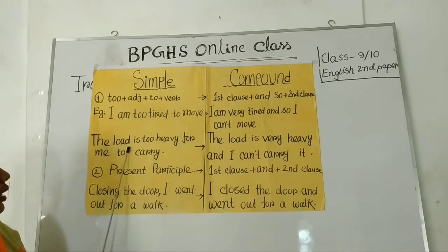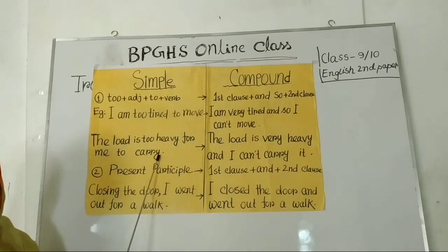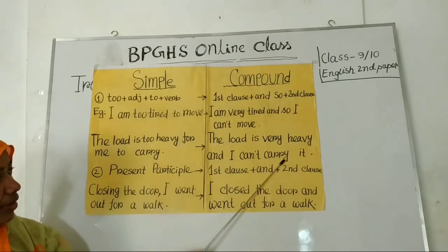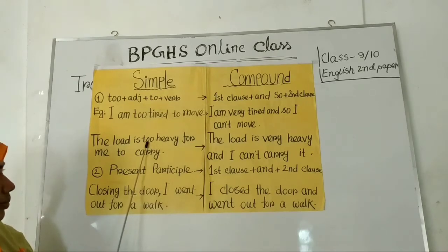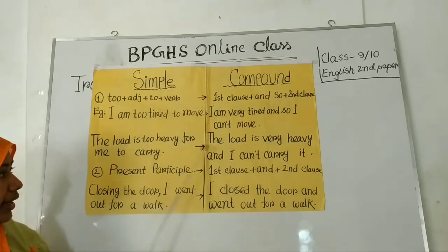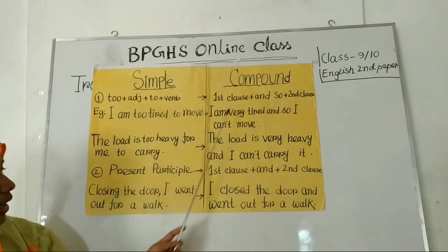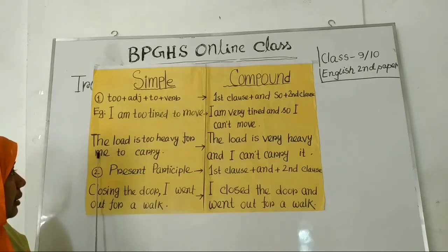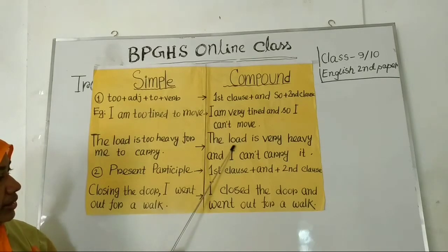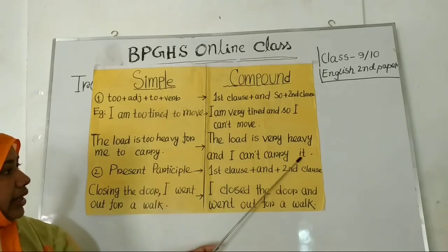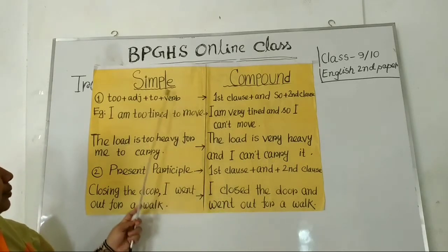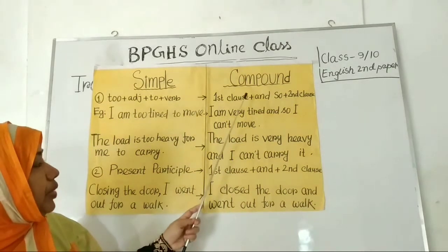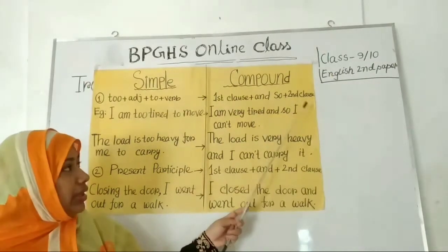Another example: 'The load is too heavy for me to carry.' The compound will be: 'The load is very heavy and I cannot carry it.' In place of too, I have used very. Because of 'for me,' I have to take a subject in the second clause — I, the subjective form of me. So remember, in case of too plus adjective plus to or verb, you have to use and so between the two clauses.